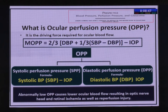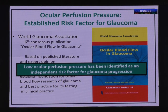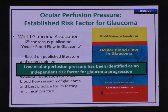Abnormally low ocular perfusion pressure causes lower ocular blood flow, resulting in optic nerve head and retinal ischemia as well as reperfusion injury. This is not new: low ocular perfusion pressure has been identified as an independent risk factor for glaucoma progression since Consensus Series 6.